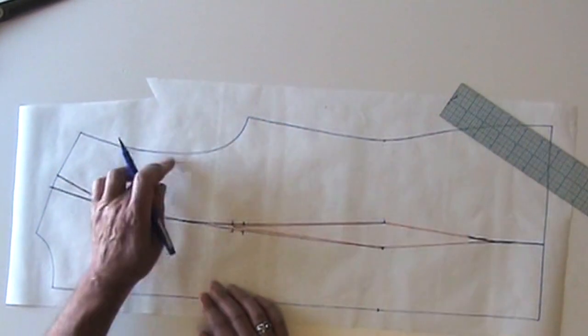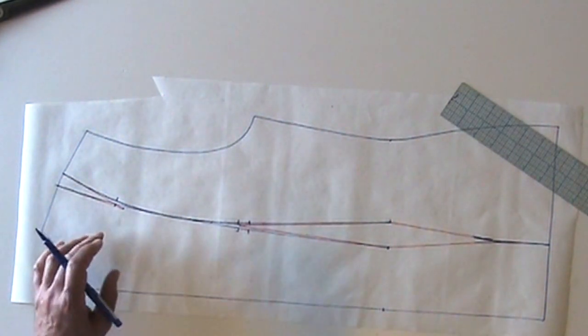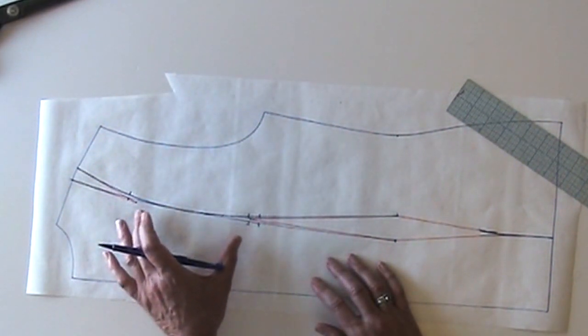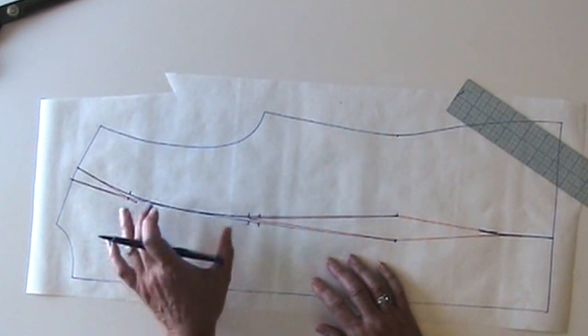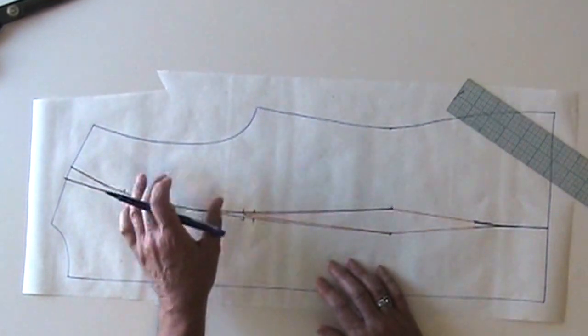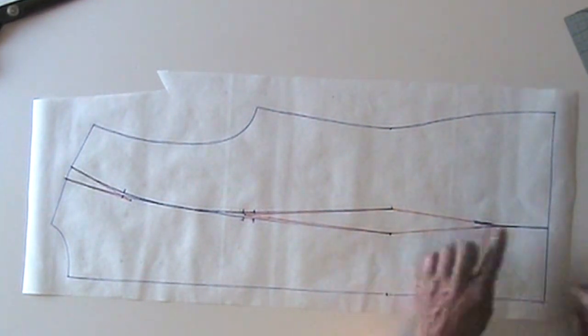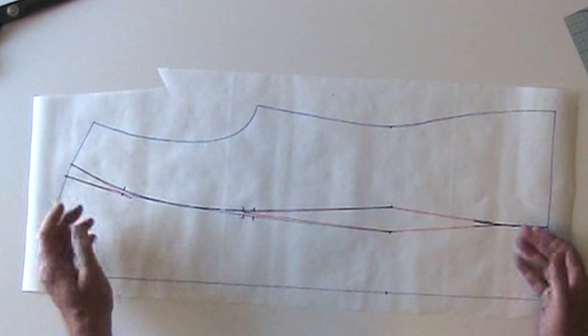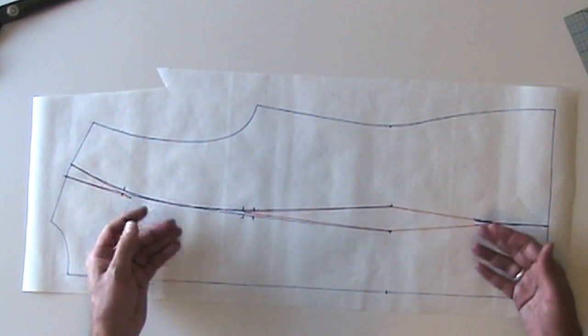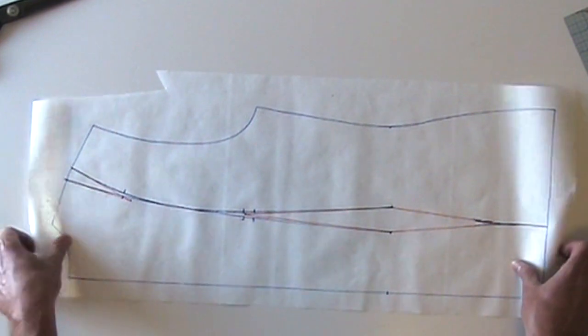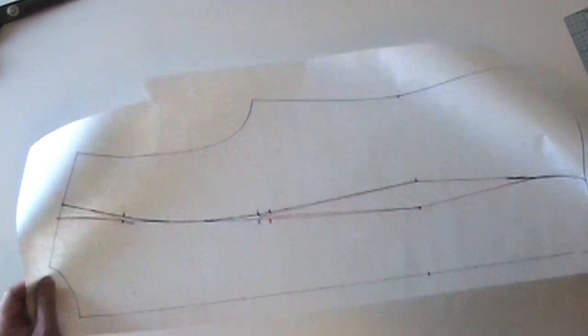Do not slash and spread this to make them the same. Instead, you'll want to ease whatever additional fullness is in the center panel into the side panel. And like before, I need to cut these apart, tape some paper to them to add seam allowances around them, and then I can cut and sew this up.